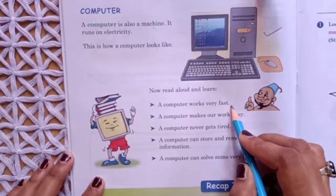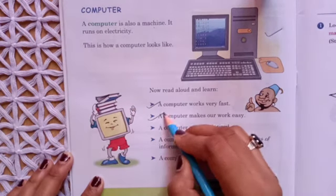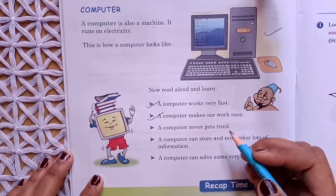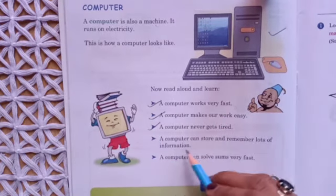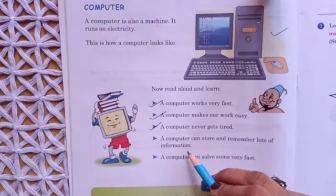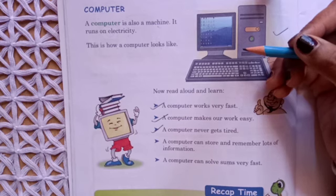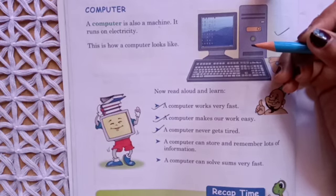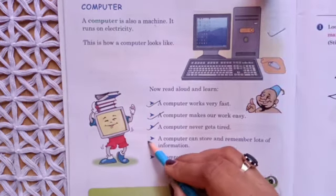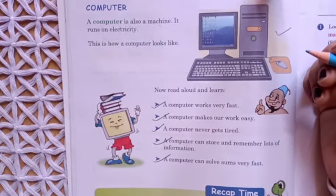A computer works very fast and makes our work easy. A computer never gets tired — just as we get tired after playing for a while, a computer never gets tired. A computer can store and remember lots of information in the form of audio, video, pictures, and documents. You watch movies, listen to songs, and save pictures on a computer. A computer can also solve mathematical sums very fast.